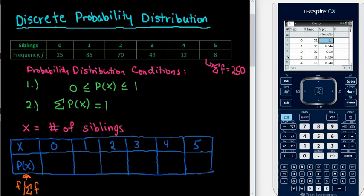So then I would just simply write these numbers down. So the probability of having zero siblings based on this sample was 0.1 or 10%. The probability of having one sibling was 0.344. The probability of having two siblings is 0.28. Three siblings is 0.196. Four is 0.048, and 0.032.